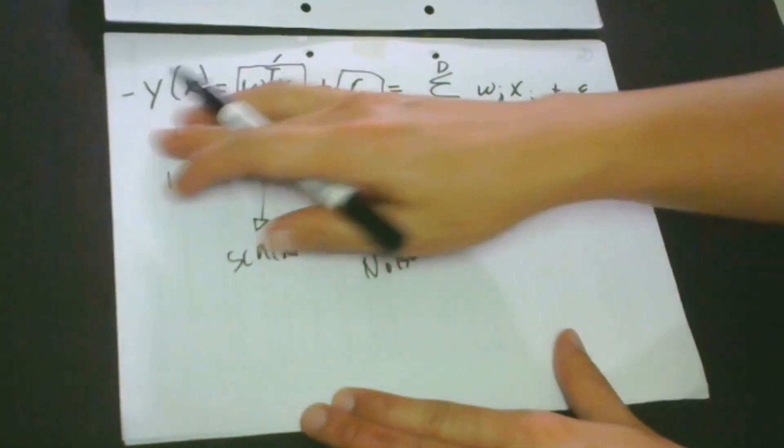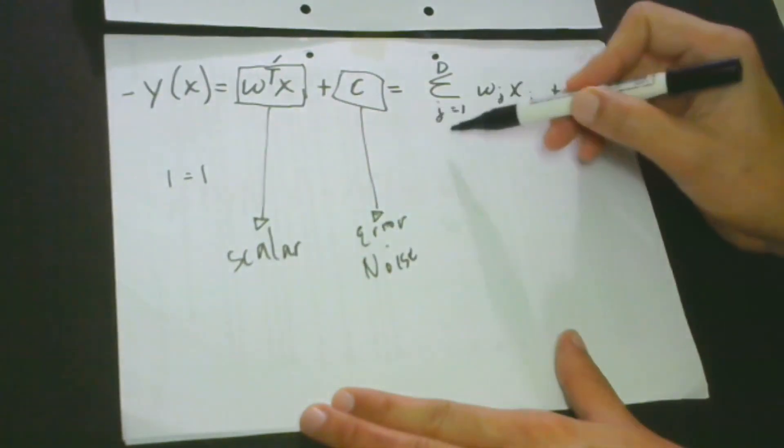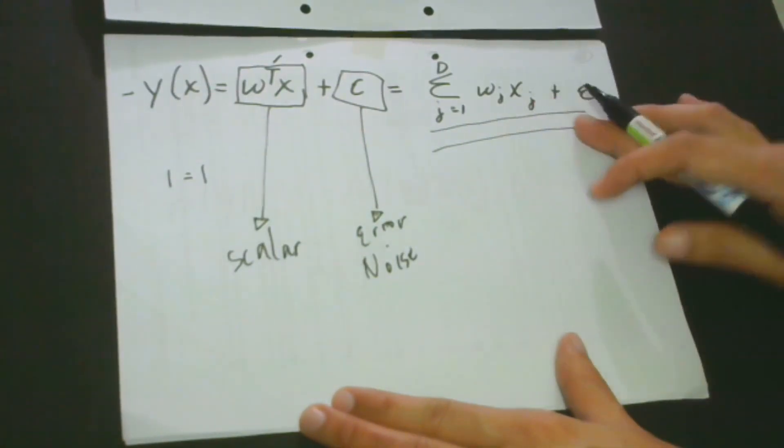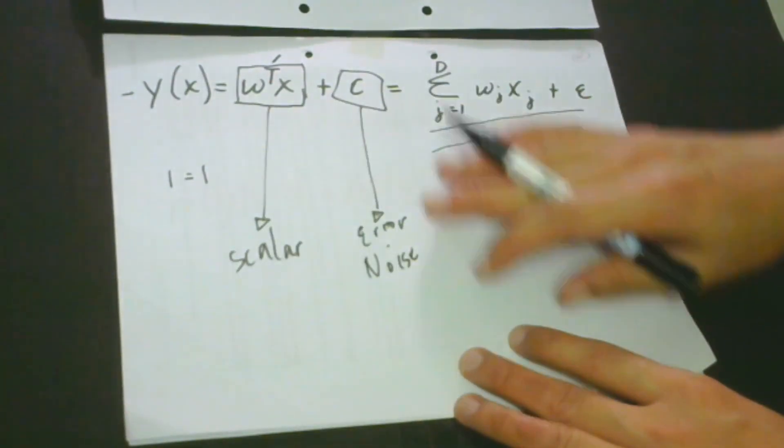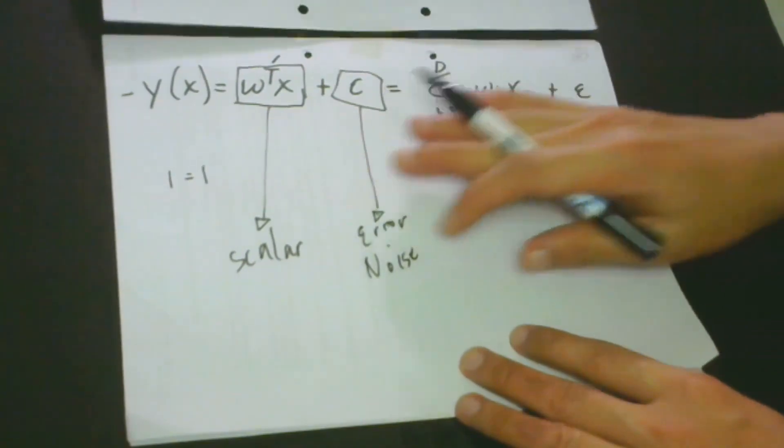And also to make this equation neater and cleaner, we can also write this one in this form. So we have the summation of WX plus E. For better understanding of this equation, we have to also think of the assumption of linear regression.